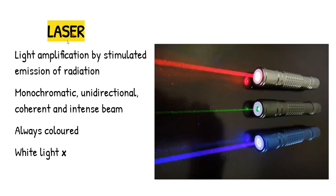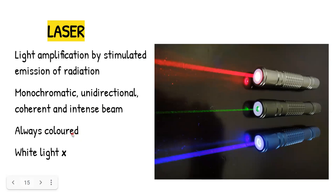Next, a short note on laser. LASER stands for Light Amplification by Stimulated Emission of Radiation. Lasers are monochromatic, unidirectional, coherent, and intense, with very little tendency to disperse — hence they always travel in a straight line. Lasers are always colored and can never be white, because white light is a mixture of different colors and lasers are by definition monochromatic.